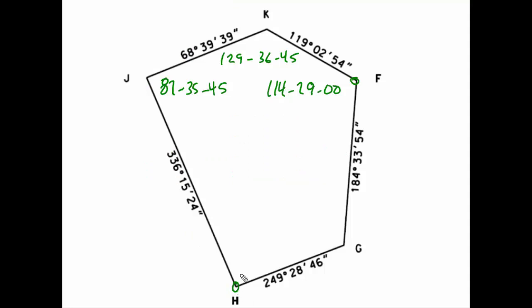When I'm standing at H and I'm looking at the interior angle, then G is on my right, J is on my left. Looking toward J, I am looking in the northwesterly direction, and this azimuth, 336, 15, 24, is appropriate in the northwest quadrant. The azimuth, 249, 28, 46, that I see here going toward G, is expressed in the opposite direction. So the back azimuth of 249 will be 69. The minutes and seconds stay the same. I'm going to take the direction on the right, and I'm going to subtract the direction on the left.